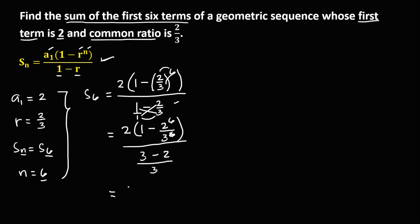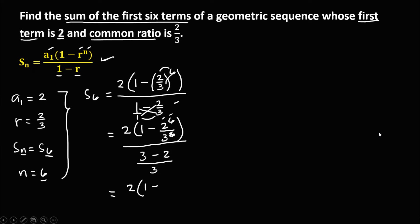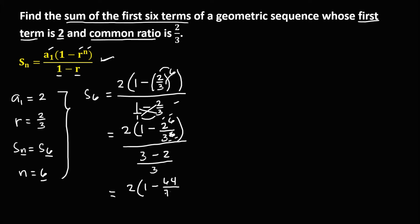Then simplify. So we have 2 times 1 minus — 2 to the power 6, so 2 to the power 6 equals 64. Then over, so over 729 — that's 3 to the power 6 — then over 3 minus 2, that's 1, then over 3.